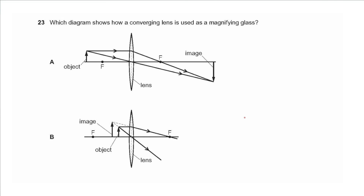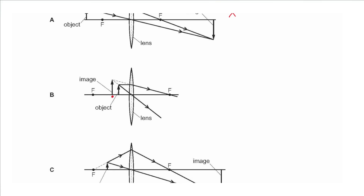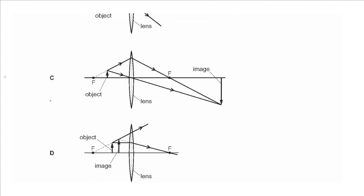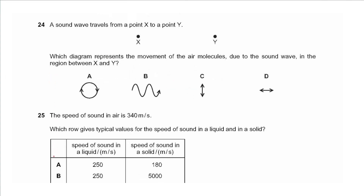Question 23 asks which diagram shows a converging lens used as a magnifying glass. The object should be placed between the focal point and the lens, and the image should be virtual — formed by extensions of light rays. In B the object is placed between the lens and the focal length and rays are extended backwards, so this is correct — choose B. The other options have incorrect ray directions.